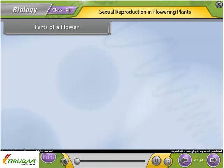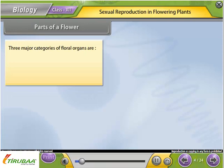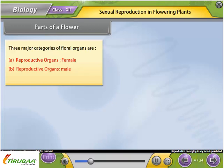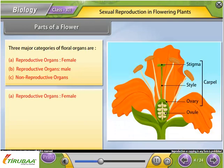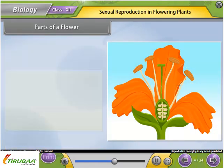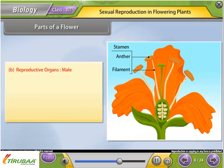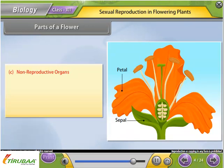Parts of a Flower: Three major categories of floral organs are — Female reproductive organs: carpel or pistil (stigma, style, ovary, ovules); Male reproductive organs: stamen (anther, filament, pollen); Non-reproductive organs: petals (corolla), and sepals (calyx).